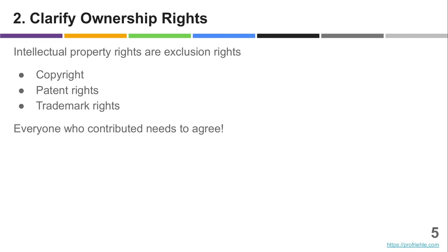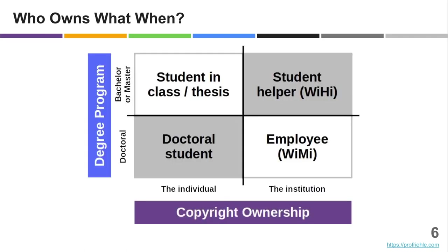That applies to copyright foremost — the copyright to the source code. It may apply to patent rights that may be involved, and sometimes even to trademark rights, though usually it's the copyright to the source code that matters. You need to get everyone's agreement. For that, you need to understand who actually contributed and holds rights in your project, and that may be a nasty surprise.